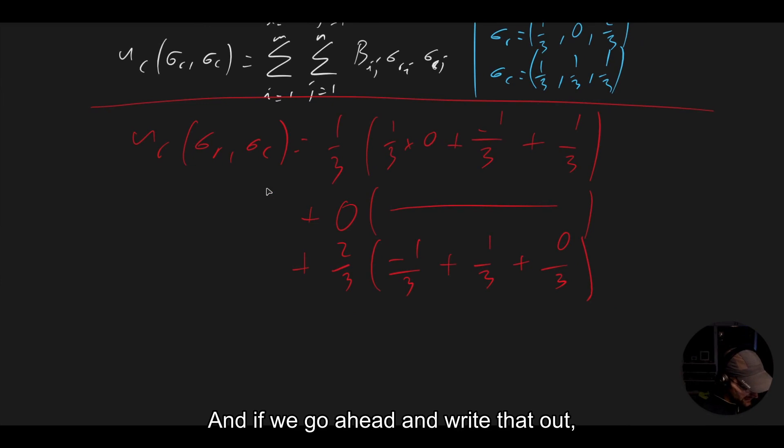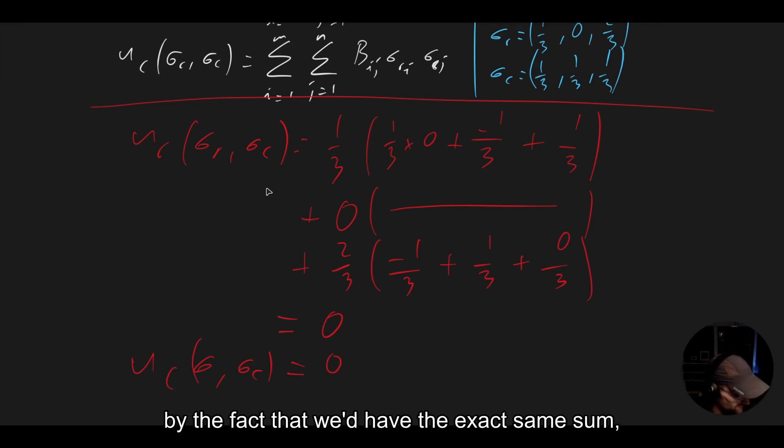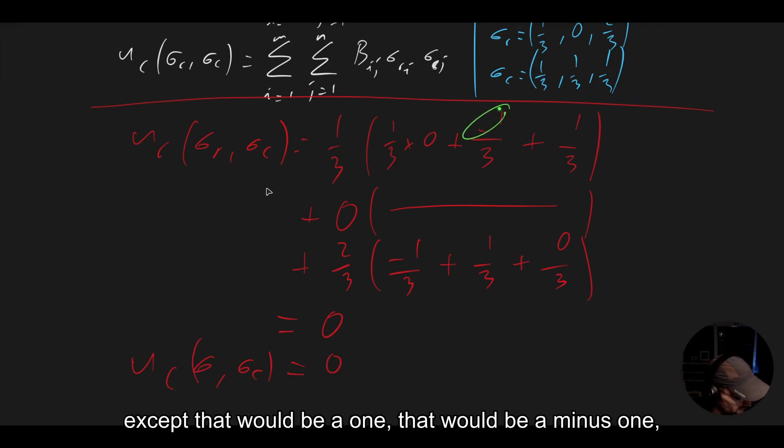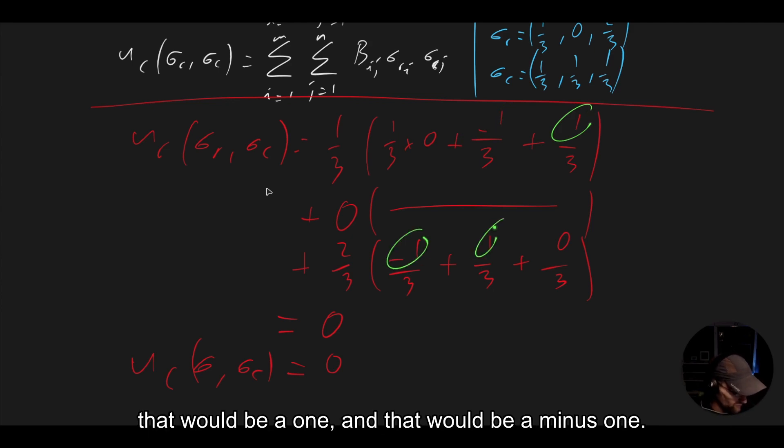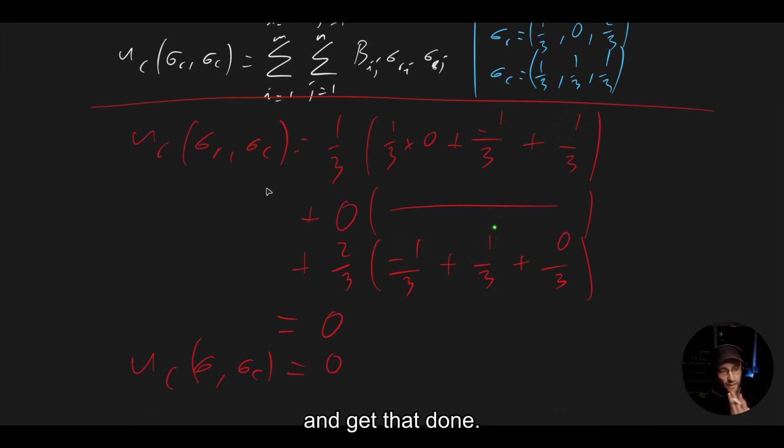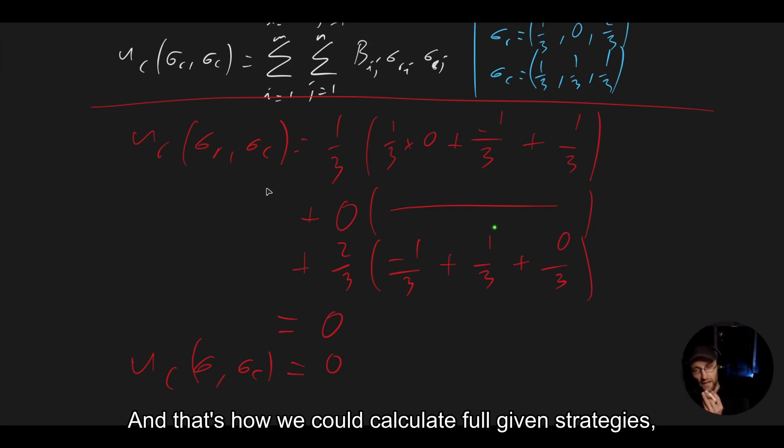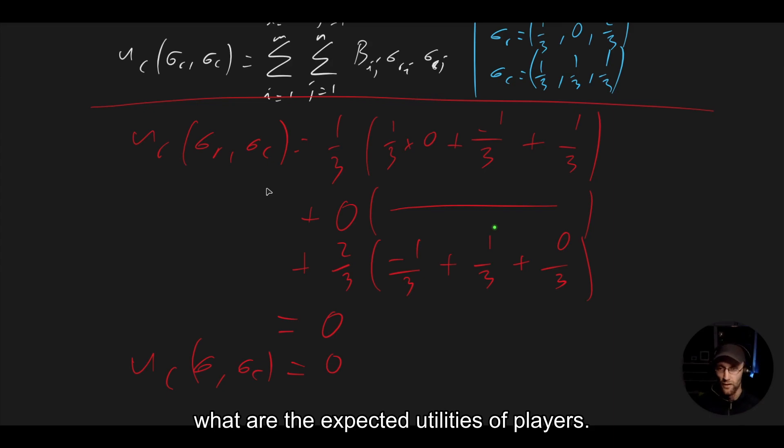And if we go ahead and write that out, we'll see that that comes to zero. So now, because it's a zero-sum game, we could automatically realize that the column player's utilities are also zero. And I will just write that there that it's also zero. And you can see that by the fact that we'd have the exact same sum, except that would be a one, that would be a minus one, that would be a one, and that would be a minus one. But you could go through a bit more slowly and get that done. And that's how we could calculate for given strategies. What are the expected utilities of players?